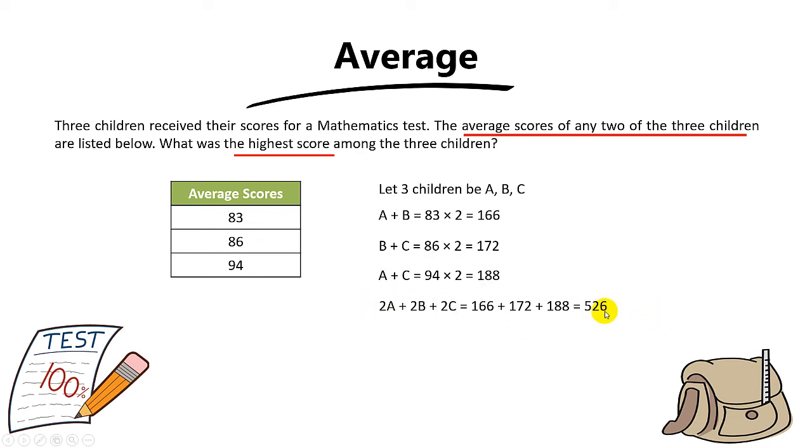So 2A plus 2B plus 2C equals 526. Give me a guess: why is A plus B plus C? To find A plus B plus C, you simply take 526 divided by 2, you get 263, and that's the total scores for the three children.